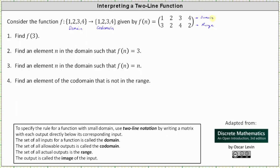And now let's look at our first question. Number one, we're asked to find f of three, where three is the input. For two-line notation, remember the output is directly below its corresponding input. So if we take a look at the third column here, this indicates that f of three is equal to four. We can say when the input is three, the output is four.